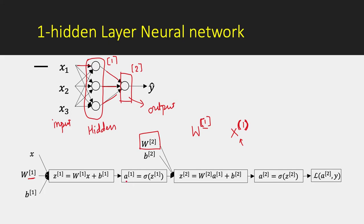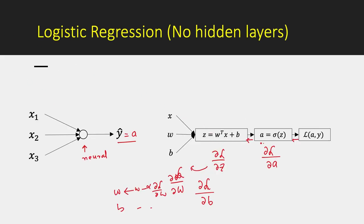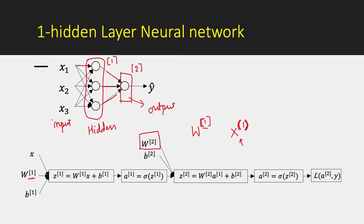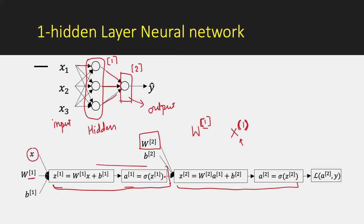The input parameters and layer-1 parameters are used to calculate z[1], similar to the z and a calculation in logistic regression. This is followed by a[1]. For the second layer, after layer 1 calculation is done, the output a[1] is treated as the new input. We feed in w[2] and b[2] corresponding to the second layer, compute z[2] followed by a[2], and finally calculate the loss.